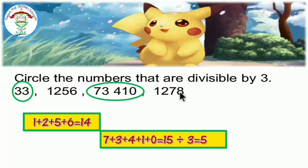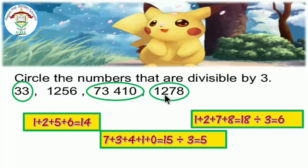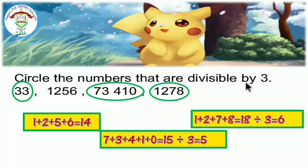1,278: to determine if this number is divisible by 3 or not, apply the rule — add the digits. 1 plus 2 equals 3, plus 7 equals 10, plus 8 equals 18. 18 can be divided by 3 equals 6, so 1,278 is divisible by 3. Please take care: 6 is not the quotient of 1,278 divided by 3.